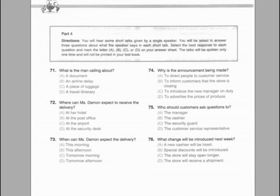Questions 71 through 73 refer to the following telephone message. Miss Damon, this is Peter Bedford calling from the Aitalia Airlines security desk. I am happy to inform you that we have located your baggage from flight AI-893. We will be delivering it to the Nardisi Hotel. I believe this is your location while you are staying in Rome. The delivery should arrive this afternoon before 4pm. Should you have any questions, please contact me at 1-888-567-4FLY. We sincerely apologise for any inconvenience this may have caused you and thank you once again for your continued patronage. Number 71: What is the man calling about? Number 72: Where can Miss Damon expect to receive the delivery? Number 73: When can Miss Damon expect the delivery?